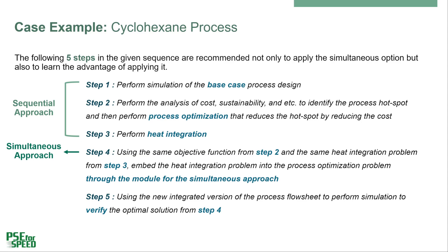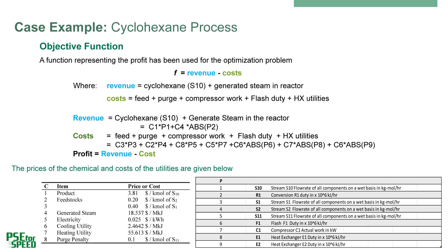Step 5: Using the new integrated version of the process flowsheet, perform the simulation to verify the optimal solution from step 4. Although the Aspen Plus v2 simulator is used to obtain the results, in principle any process simulator could be used. Step 6: For the process optimization based on cost, we need to define an objective function. In this example, the objective function is selected to maximize the profit, which is the revenue minus the operating costs.